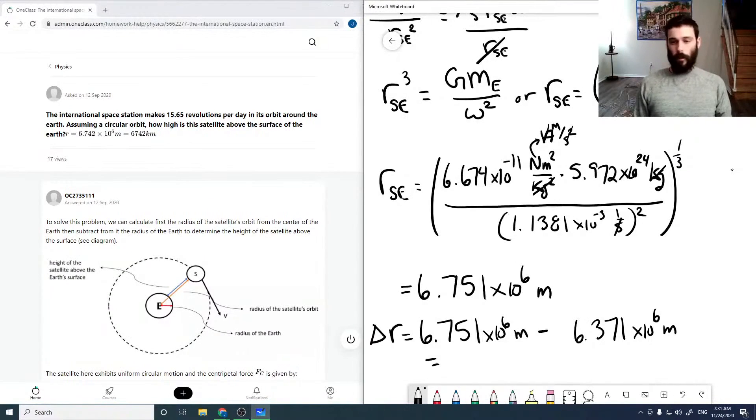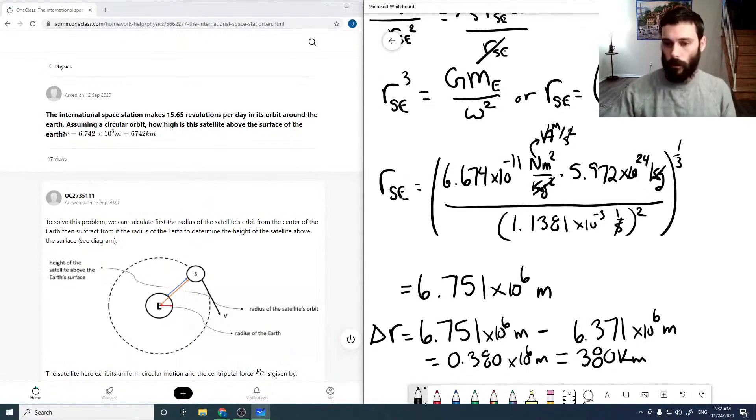So delta r is then this radius from the center minus the radius of the Earth, which is 6.371 times 10 to the 6 meters. Or in the end, we get 0.380 times 10 to the 6 meters, which is about 380 kilometers, or is exactly equal to 380 kilometers. So we've estimated the radius of the space station's orbit at 380 kilometers above the Earth's surface.